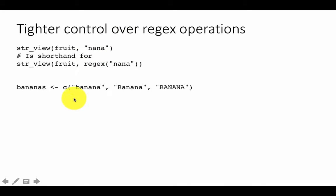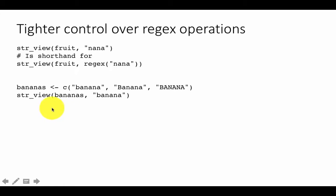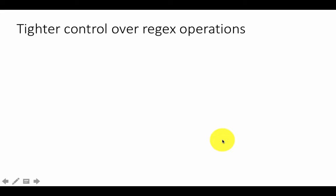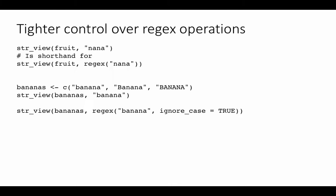But if you want tighter control, suppose you have three strings: 'banana', 'Banana', 'BANANA'. Everything is the same except the case is different — lowercase, sentence case, and completely uppercase. If we say str_view bananas, 'banana', this will obviously match only the first one because by default regular expression matching is case sensitive. But suppose we want it to be case insensitive. Then you can say str_view bananas, regex('banana', ignore_case = TRUE). We are saying match it but ignore the case, in which case all three words banana would be matched.